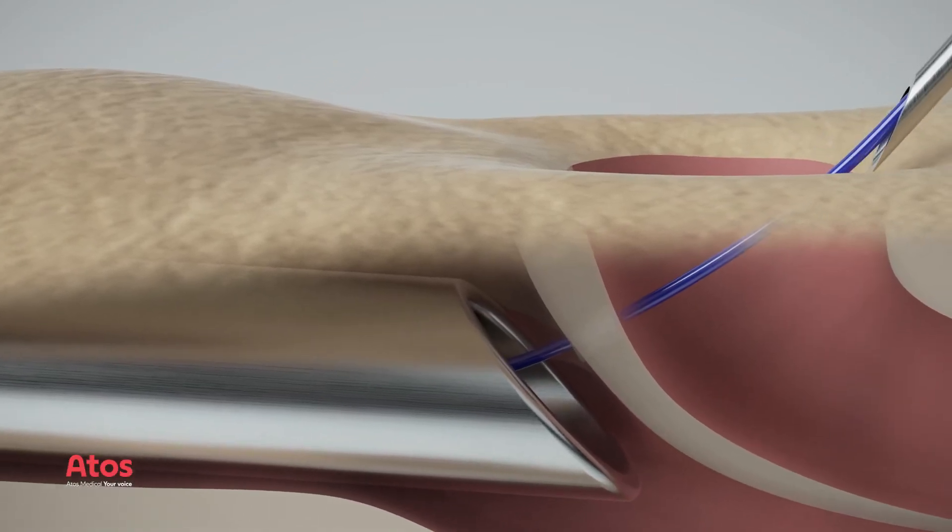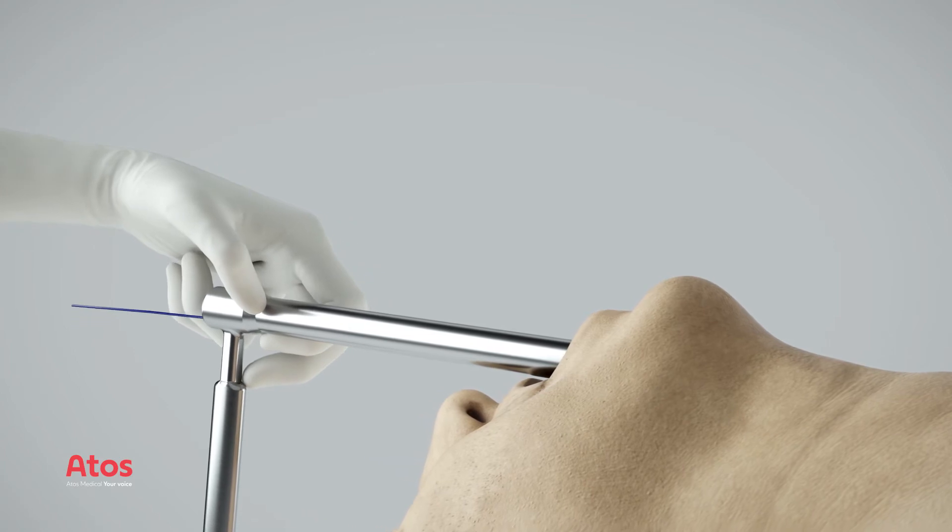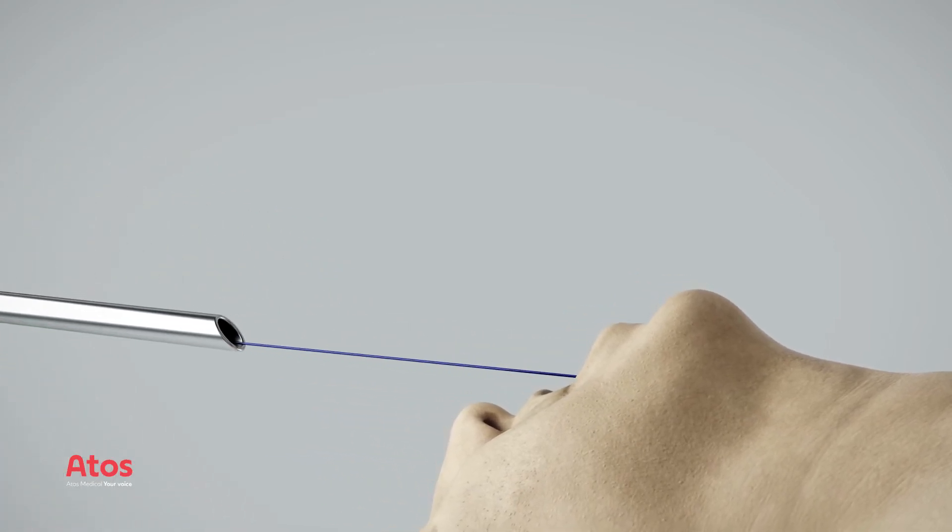Remove the puncture needle. Then remove the instrument. Only the guide wire should remain in situ before continuing.